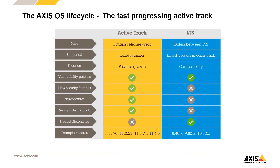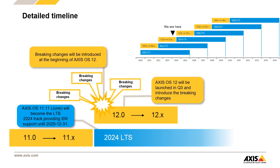The question is where we are introducing these breaking changes. Looking at the Access OS lifecycle, the answer is that these changes are introduced on the active track as our most progressive track where all software development takes place. We intend to introduce breaking changes in a controlled way so that customers and partners can adapt to them in time. We're going to release Access OS 11.11 in June as the last active track release, concluding Access OS 11 altogether.